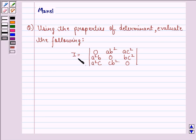evaluate the following: I equals the determinant with entries 0, ab², ac², a²b, 0, bc², a²c, cb², 0.